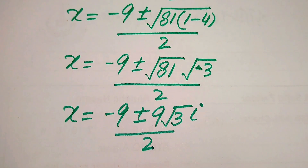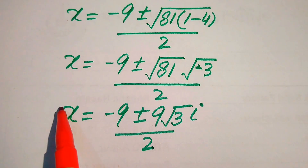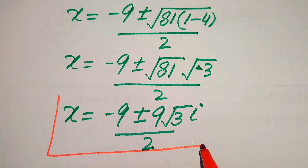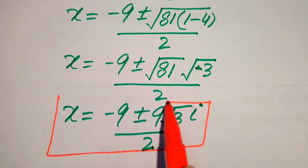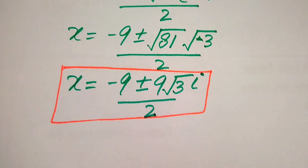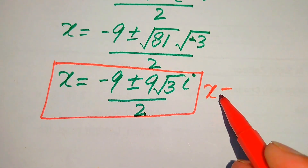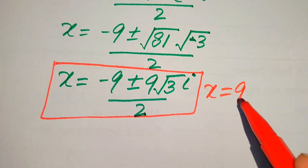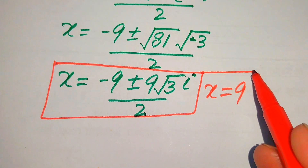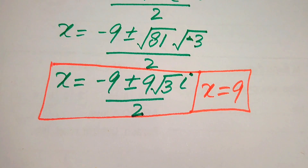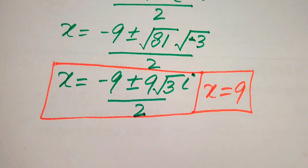These are the other two complex roots of the given equation. Finally, the three roots of the given equation are x equals to 9 as the real root, and the two complex roots. This is our final answer. Thank you so much for watching this video, please subscribe to my channel for more exciting videos.